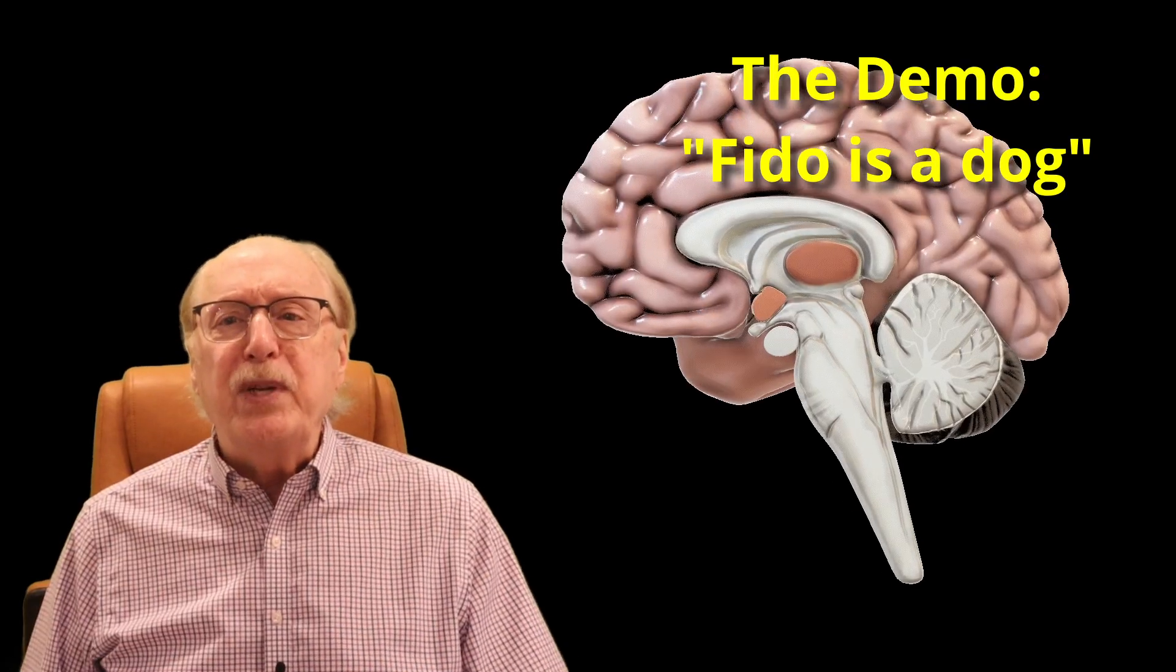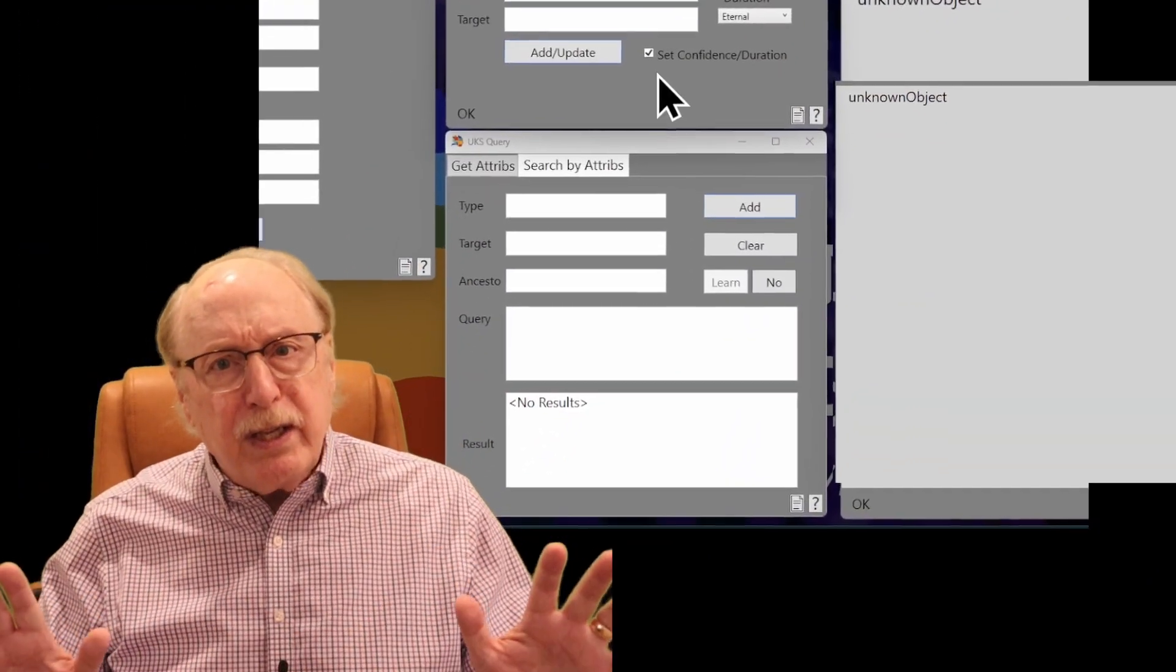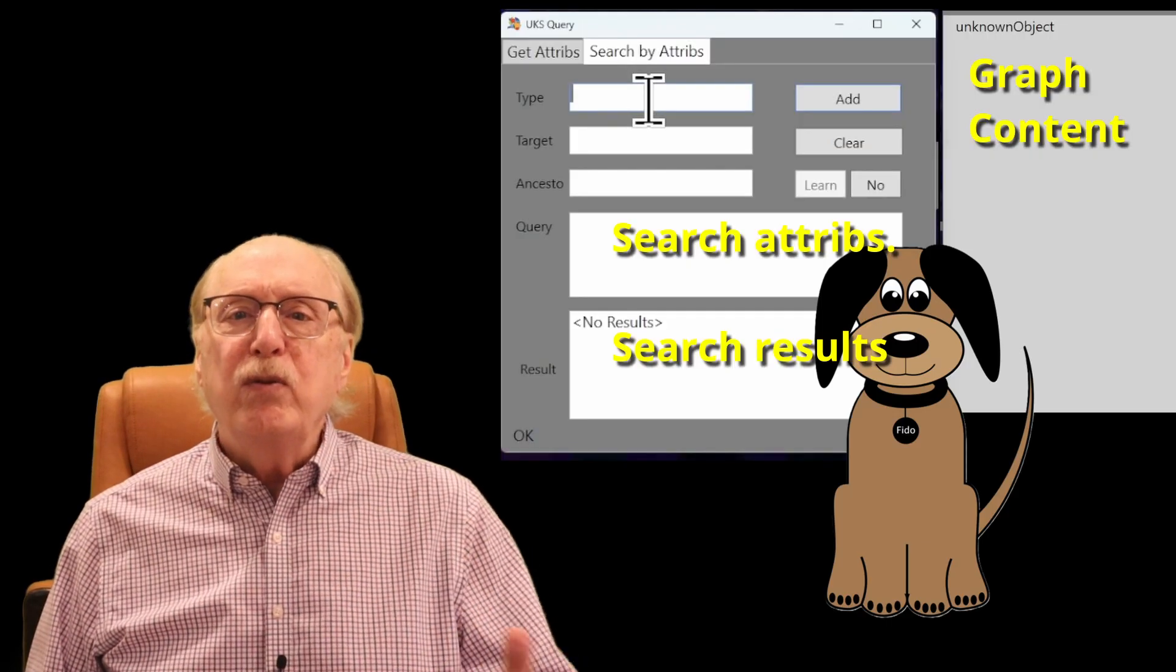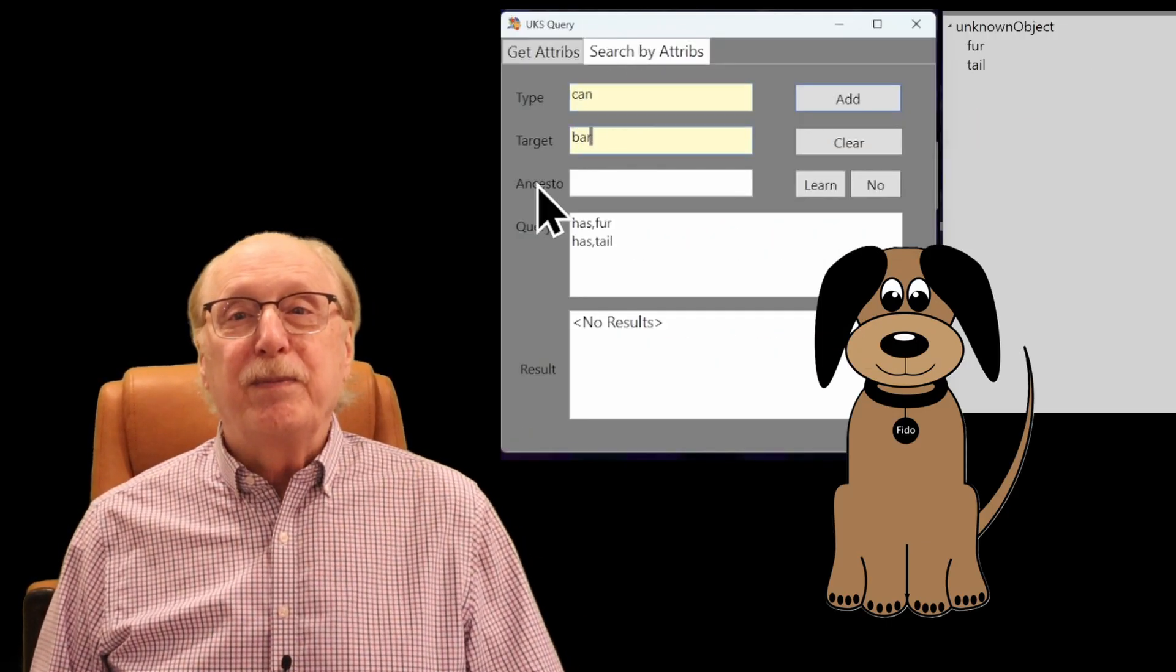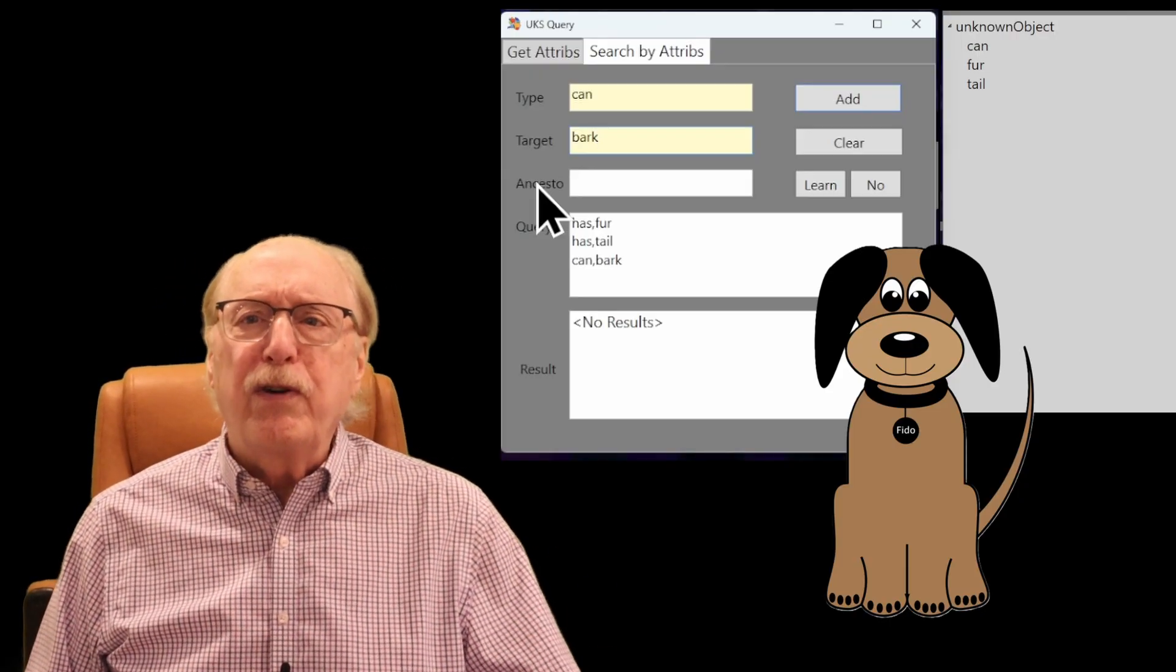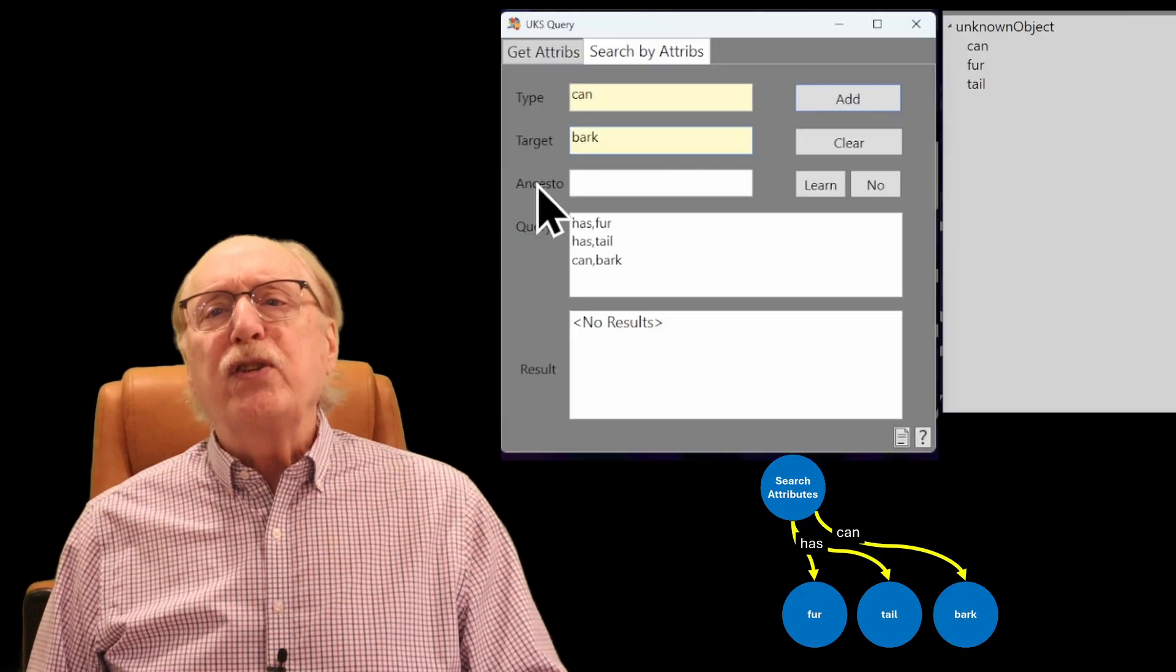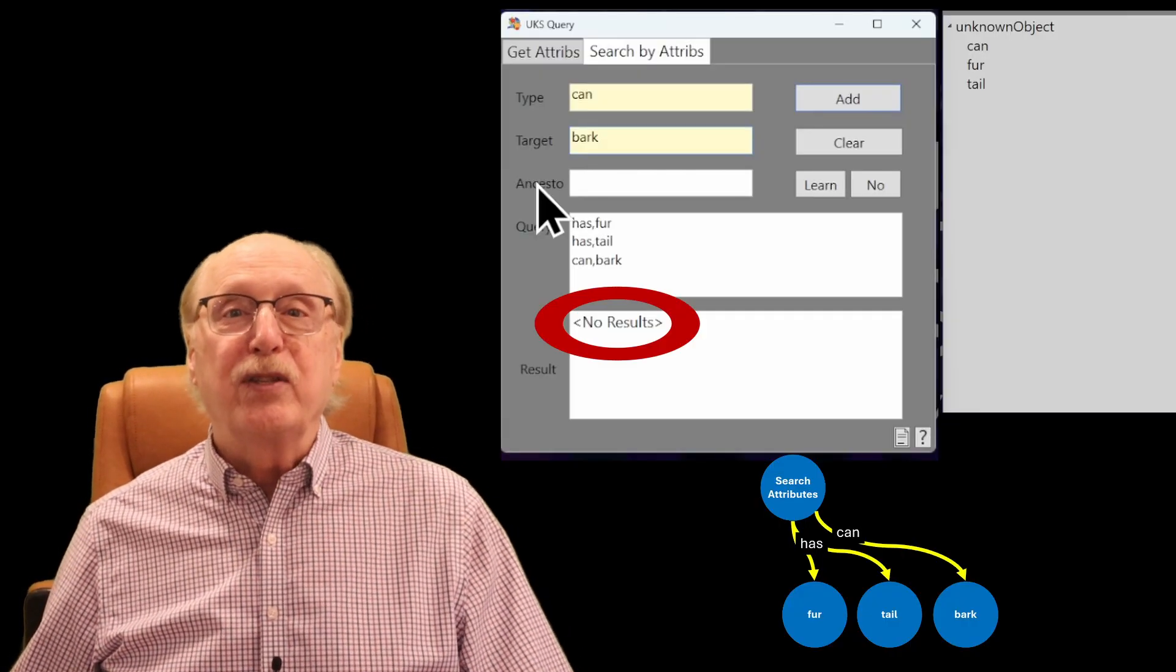Let's begin with an empty brain, a nearly blank information graph. Nothing is known, nothing has a name. Now imagine the first sensory experience: you see something with fur, a tail, and the ability to bark. We can use any set of sensations like visual fragments or phonemes, but I've chosen this set of attributes for a clearer explanation.